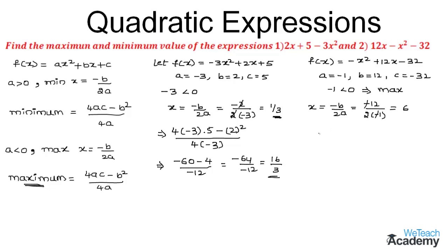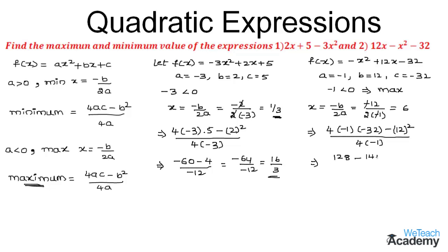Now let us find the maximum value by using the same formula. We get 4 × (-1) × (-32) - 12² divided by 4 × (-1). On multiplying we get 128 - 144 divided by -4. So 128 - 144 = -16 divided by -4, and on simplifying this we get the value as 4.